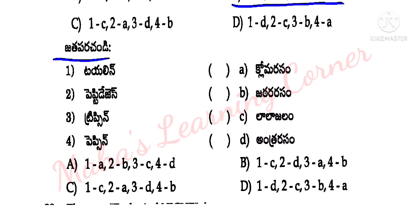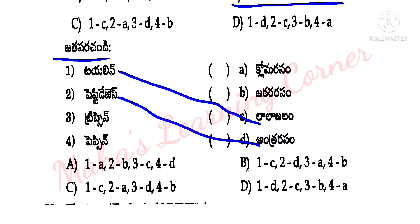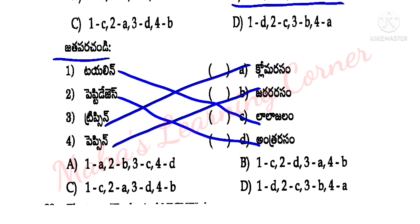Ptyalin is found in saliva; peptidase in intestinal juice; trypsin in pancreatic juice; pepsin in gastric juice. Option B is the correct answer.